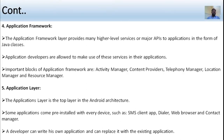The application framework layer provides many higher-level services and APIs to applications in the form of Java classes. Application developers are allowed to make use of these services in their applications. Important components of the application framework are: Activity Manager, Content Provider, Telephony Manager, Location Manager, and Resource Manager.